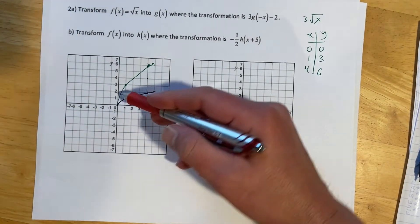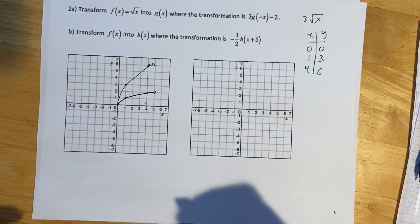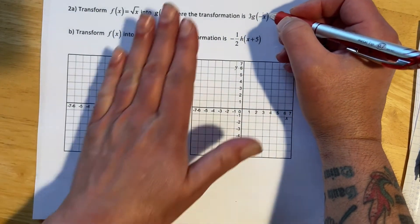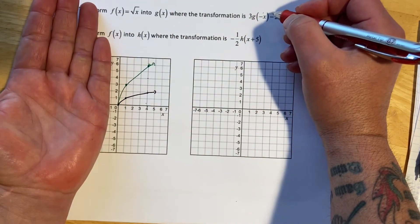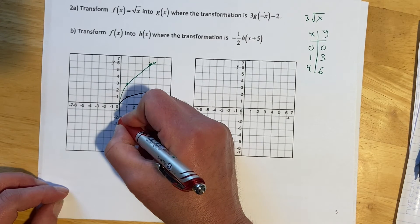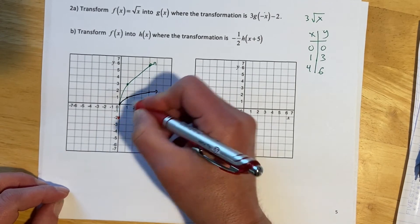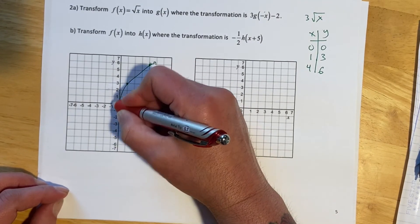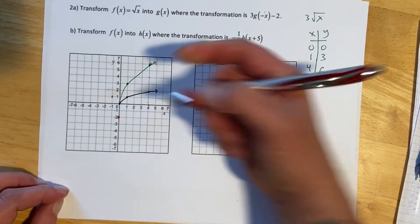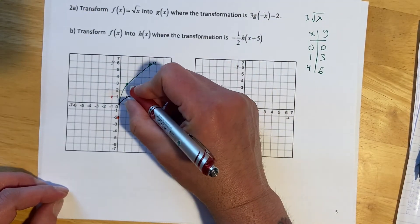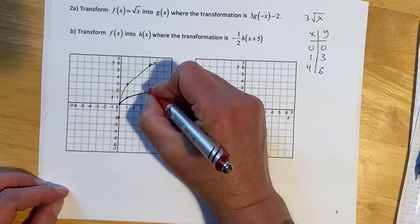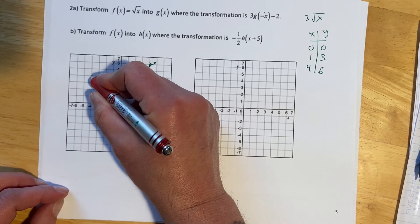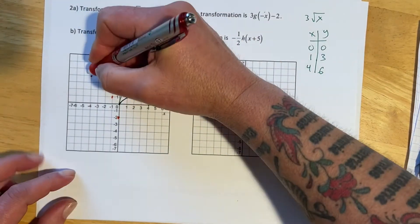Once you have the stretch it's not too bad — you can just copy that shape wherever you need to go. In this case the minus is on the inside, so it's going to reflect about the y-axis and shift down 2. So the new starting point is here. This used to go over 1, up 3 — it's still going over 1, up 3, just going the other way now because of the reflection. And it used to go over 3 then up 3, so I'll go over 3 and up 3, and that gets me the next point.